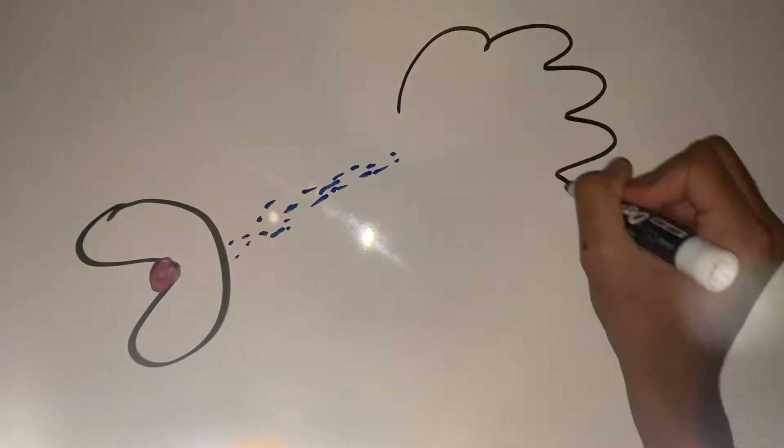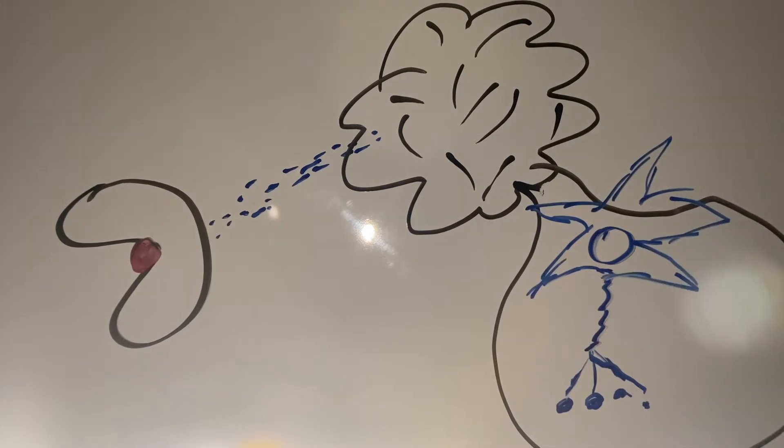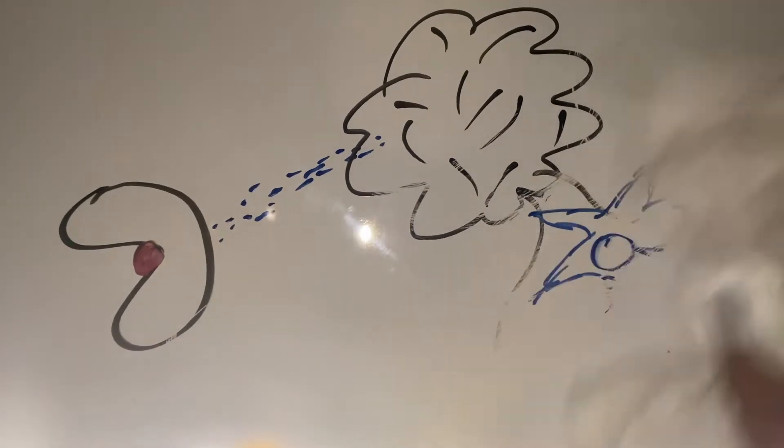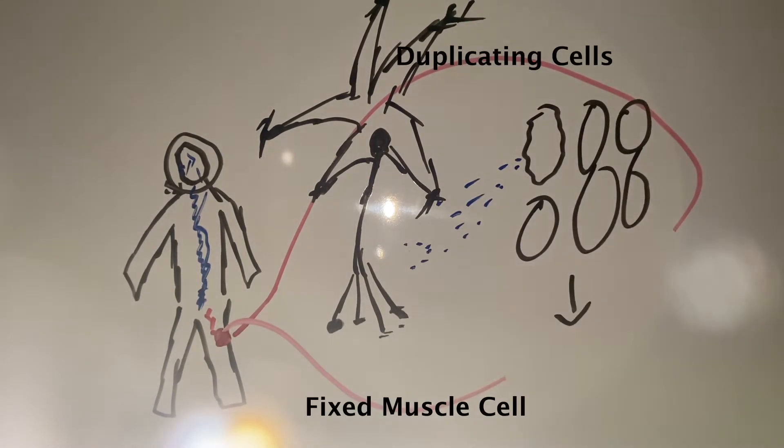When the neurotransmitter reaches the cerebral cortex, the cortex receives these signals and converts them into an electrical impulse. These impulses travel to receptors near the inflamed muscle and tell cells near the muscle to duplicate, so they can replace damaged cells and fix the muscle.